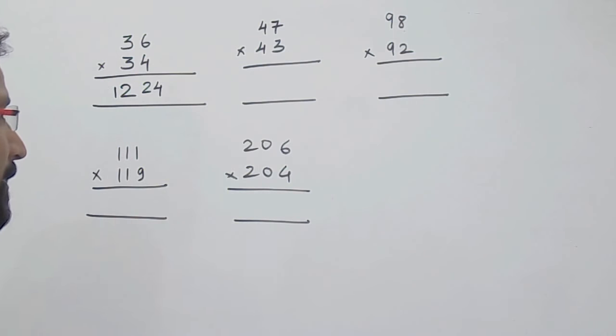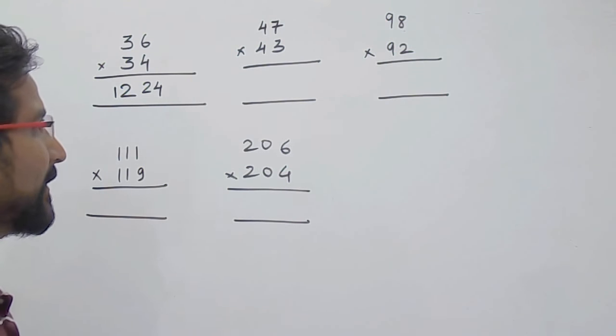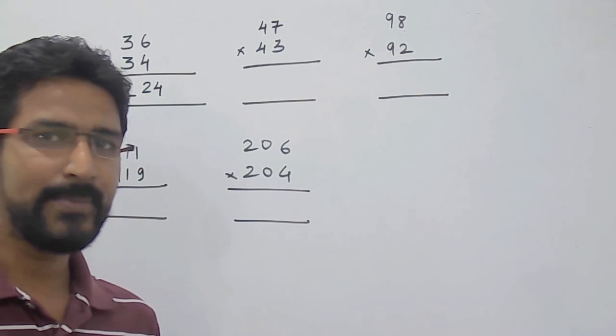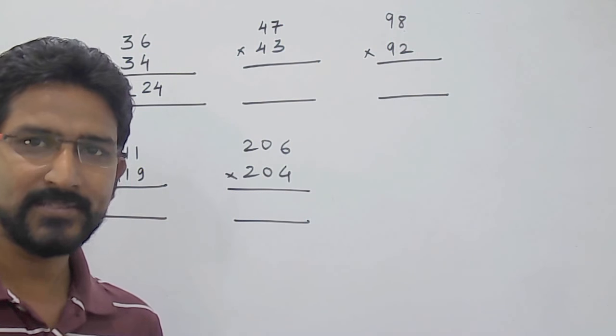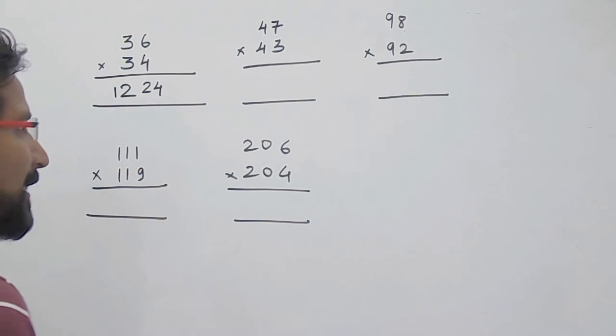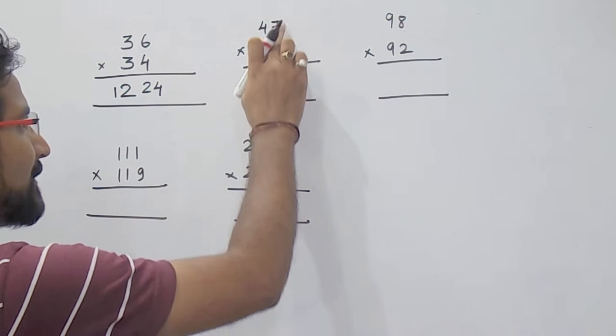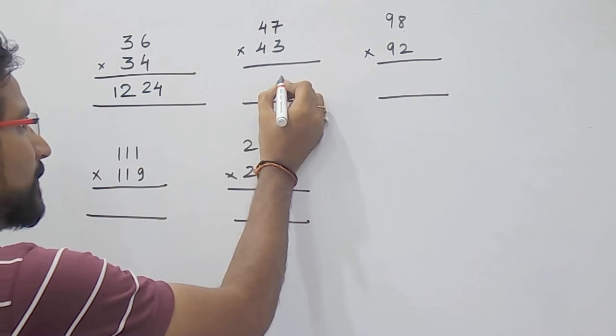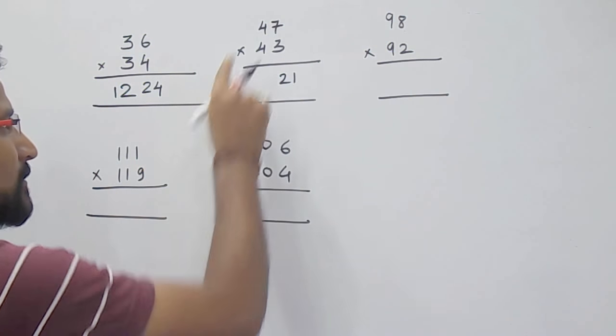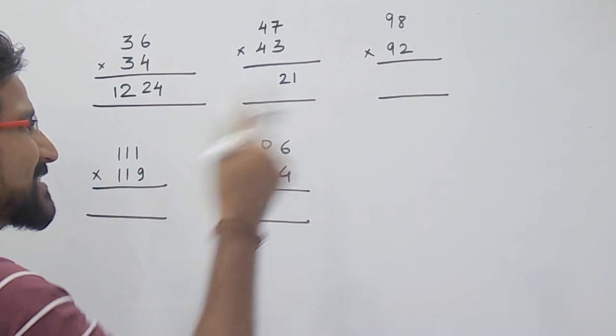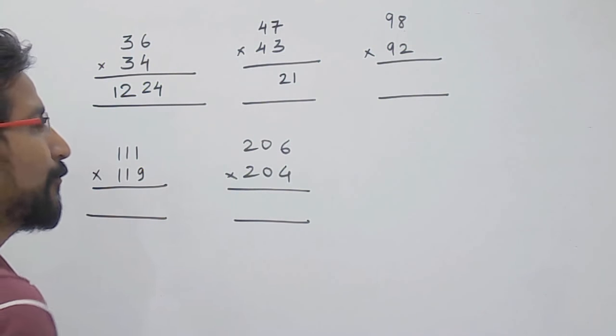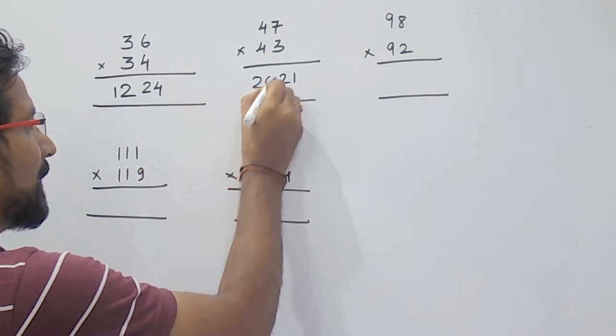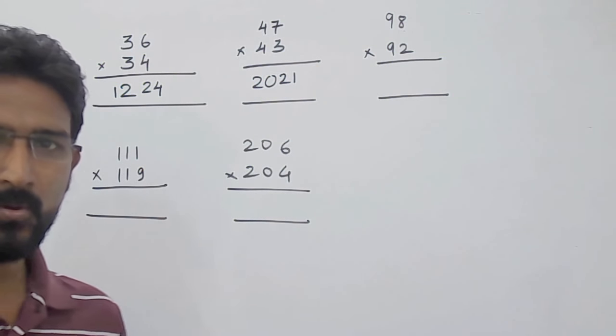Now we see the next example. Again here, 47 into 43, the unit place add up to 10. That is 7 plus 3, that is 10. So we can apply this trick. Multiply the unit place values, that is 7 into 3, that is 21. Its 10s place is 4. The next number is 5. So 5 into 4, that is 20. So your answer is 2, 0, 2, 1.